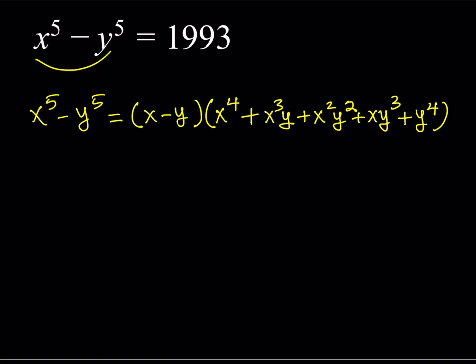There are two cases. The first case: since the product is prime, one of the factors must be 1. Suppose x minus y equals 1. That means x equals y plus 1 — x and y are integers that differ by 1. For example, if y equals 1 then x equals 2; if x equals 10 then y equals 9.